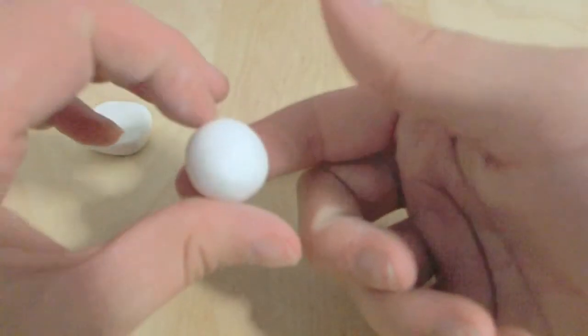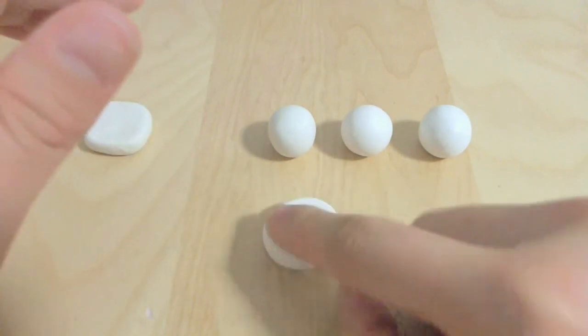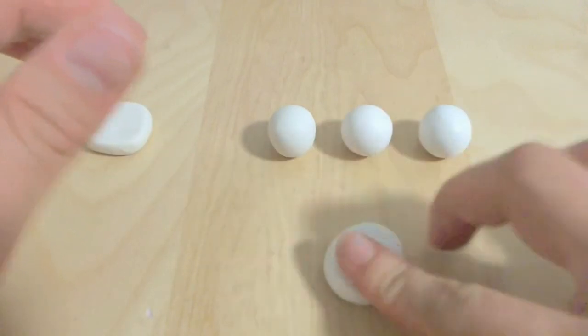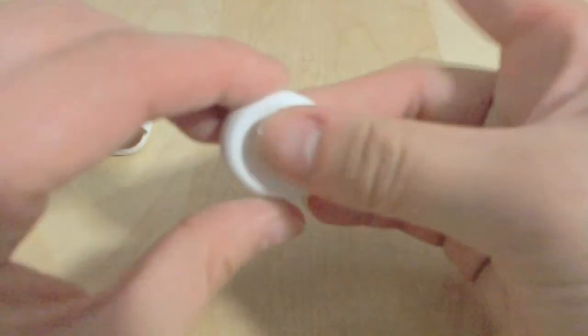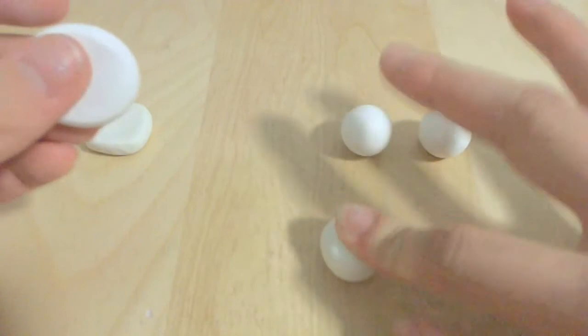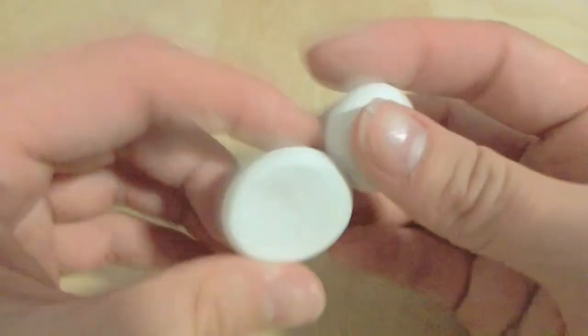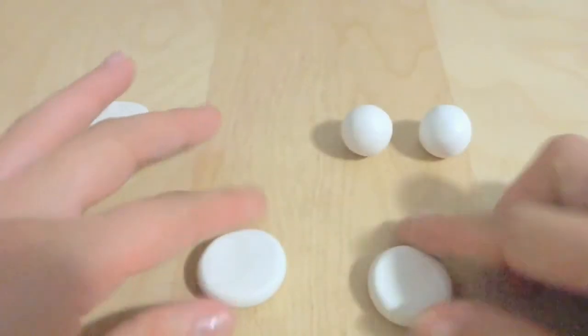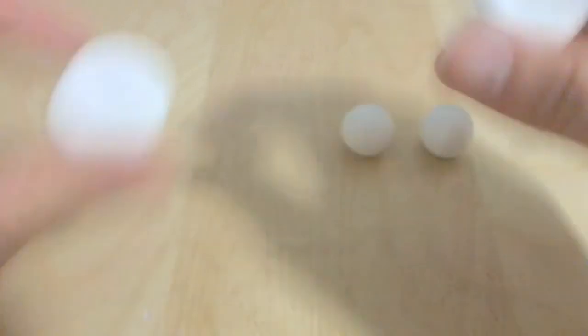This is Sculpey 3 and Sculpey 3 is one of the most popular brands and most well-known brands of polymer clay. This and Craftsmart White are very similar. You can tell they're about the same tone. You can't really tell because my lighting's kind of weird so it's making it look kind of weird, but they're about the same tone.